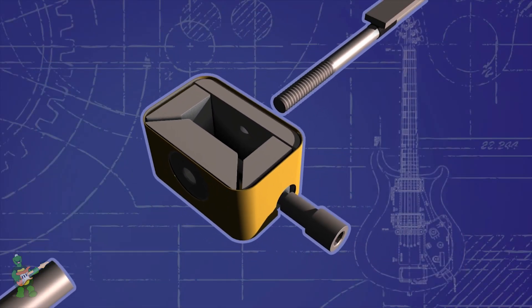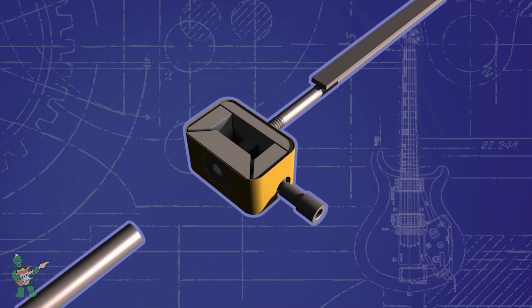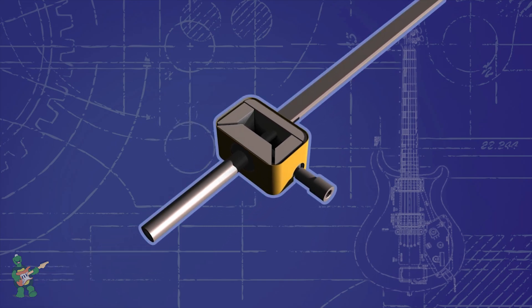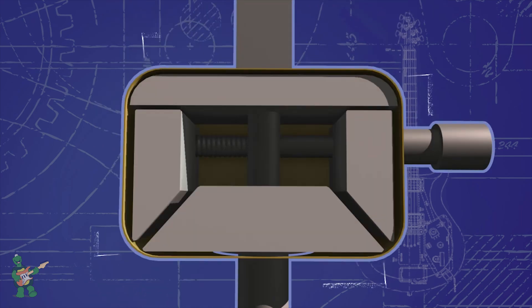So now that we understand how a double truss rod works, let's talk about the side adjust mechanism. The side adjust mechanism is basically a tiny box that sits in between the tube and the adjustment nut. It floats freely in there so that the adjustment nut can still apply inward pressure on the tube.